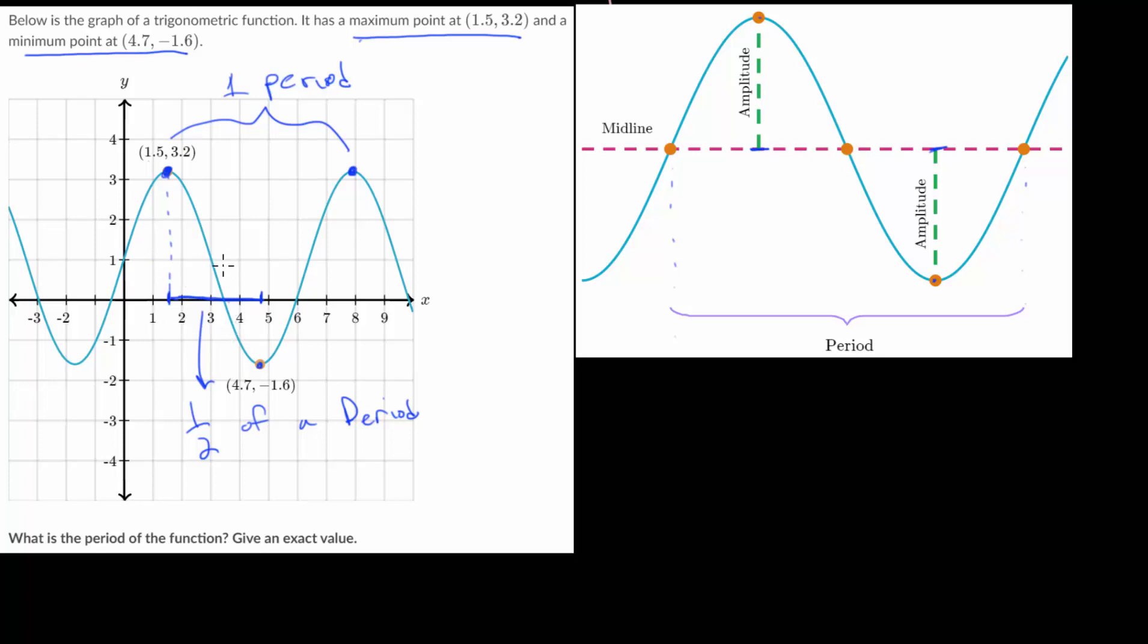The way to figure out this horizontal distance is to notice the x coordinates of each of these points. We have an x value of 4.7 for the minimum and for the x value of the maximum point, we have a value of 1.5. So if we find their difference, 4.7 minus 1.5, we will figure out what half the period is. And we can compute that 4.7 minus 1.5 would just be 3.2.